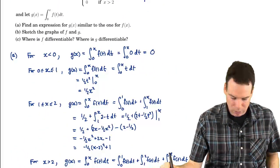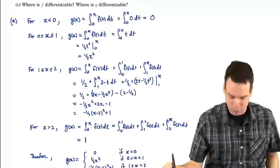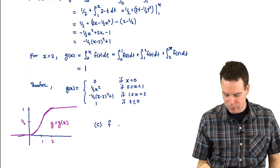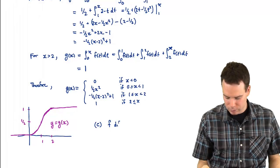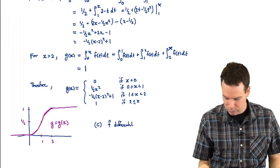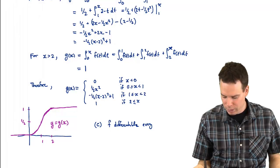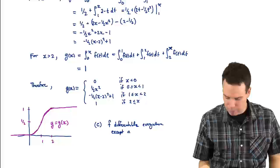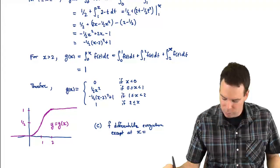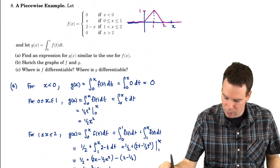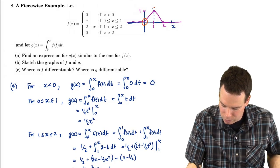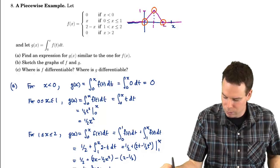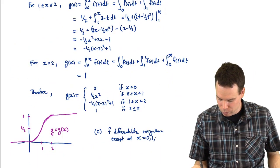So what's our next question? Well, our next question is, where is f differentiable? Where is g differentiable? So that's part c. So f is differentiable everywhere except at x equal, and we can get this from the graph. Where is it not differentiable? At these corners. It's not differentiable at 0, 1, and 2. So f is not differentiable at x equals 0, 1, and 2.